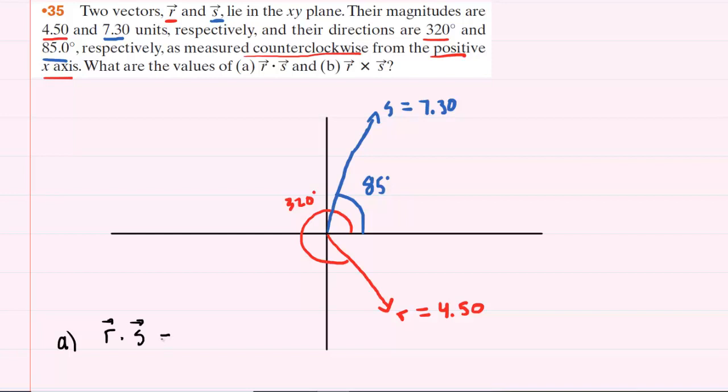We recall that the dot product can be found in a couple of different ways, but in this case it's most convenient to use the following. We can take the magnitude of r, multiply it by the magnitude of s, and then multiply by the cosine of the angle between those two vectors. Now it will be very important to find the correct angle between the two vectors.